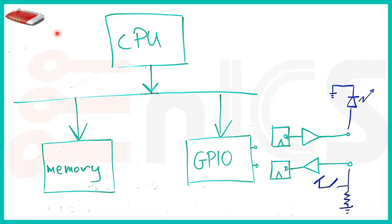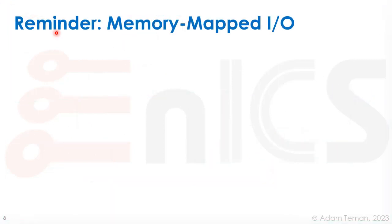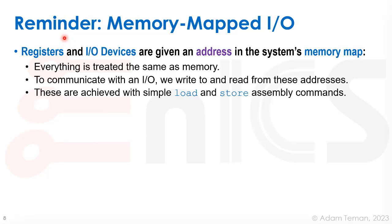Let me remind you of memory-mapped I/O: registers and I/O devices are given an address in the system's memory map. One of the big ideas in computing is that everything is treated the same as memory. To communicate with I/O, we write and read from the address assigned to that I/O device, and the device responds — for example, by turning an LED on or off.